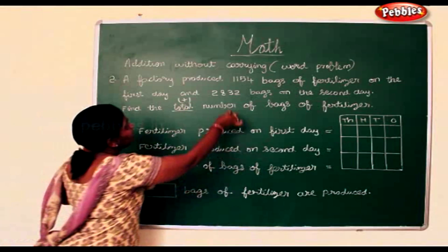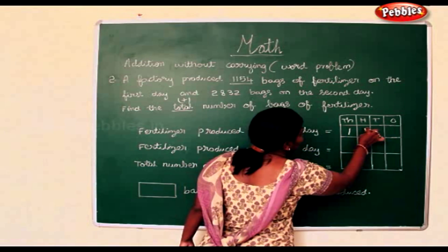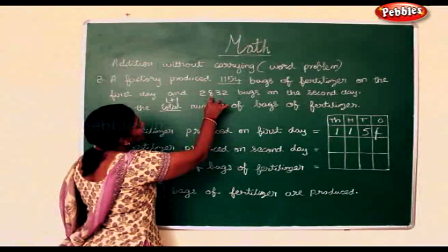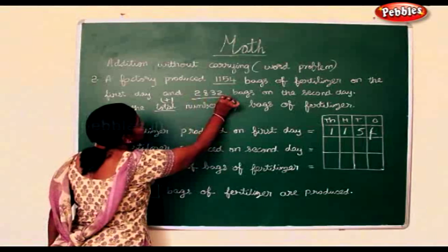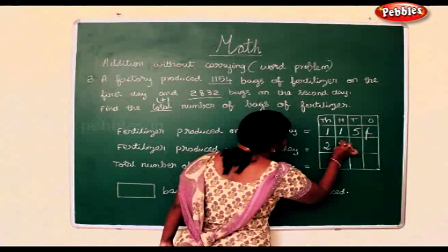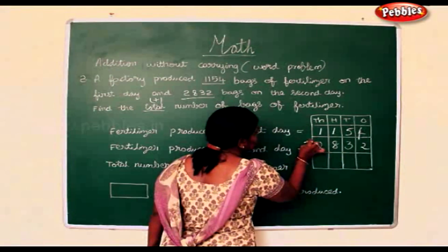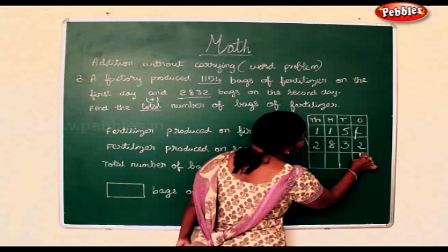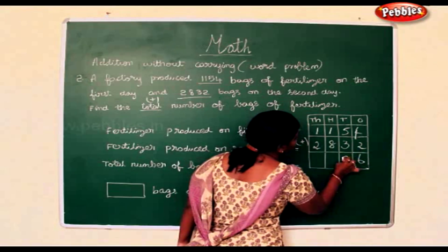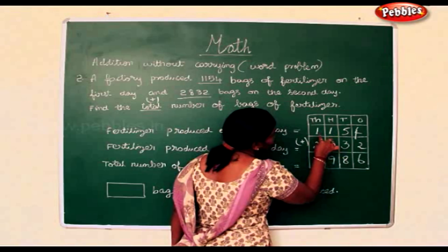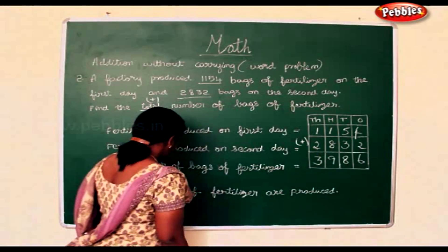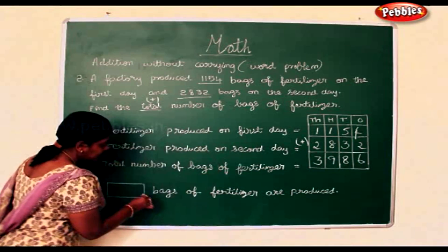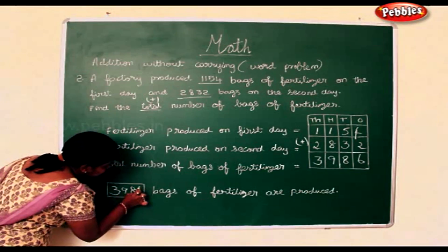Fertilizer produced on the first day is 1,154, and 2,832 bags on the second day. We will put a plus symbol since we are going to add. 4 add 2 is 6. 5 add 3 is 8. 1 add 8 is 9. 1 add 2 is 3. The total number of bags produced is 3,986.